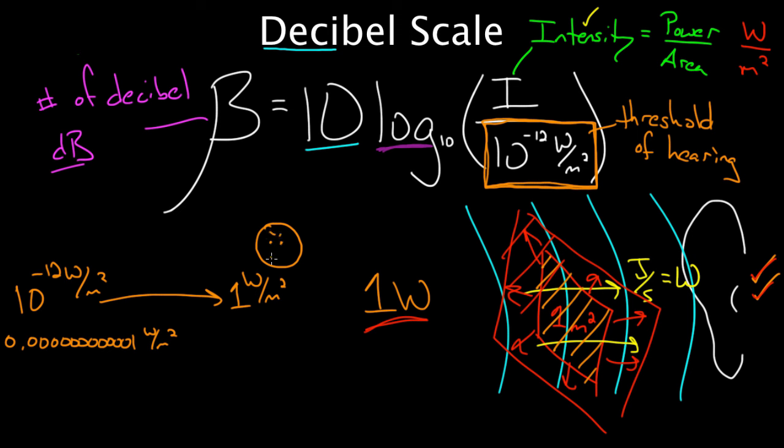So there's a huge range, 12 orders of magnitude. This one watt per square meter is a trillion times bigger than this side. This scale is just way too big. This is awkward. We want a scale that's smaller. Maybe like one to a hundred to measure loudness. We don't want to measure from one to a trillion or a trillionth to one. And that's what logs are going to do.